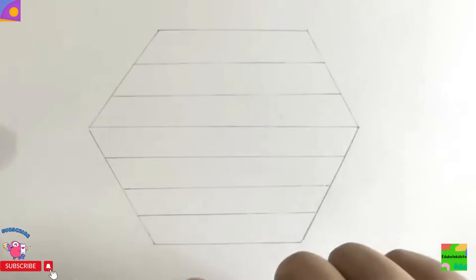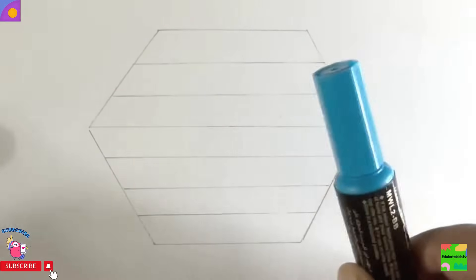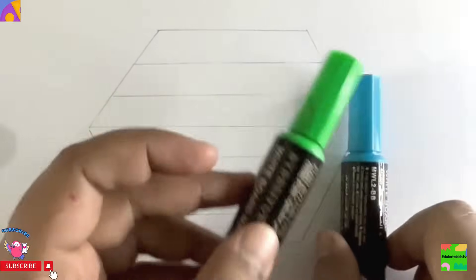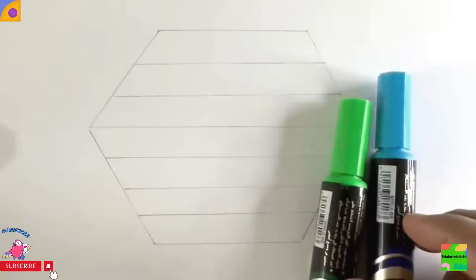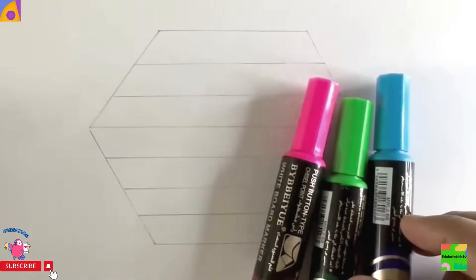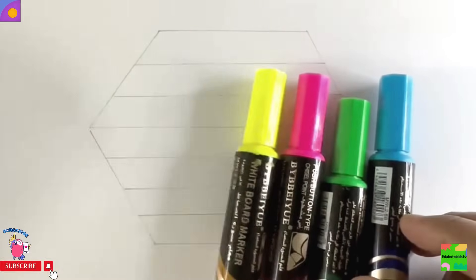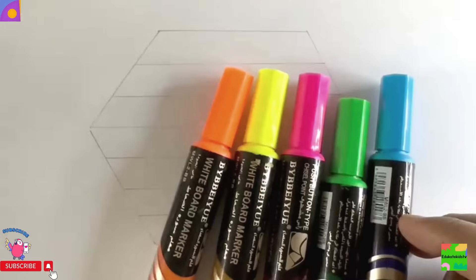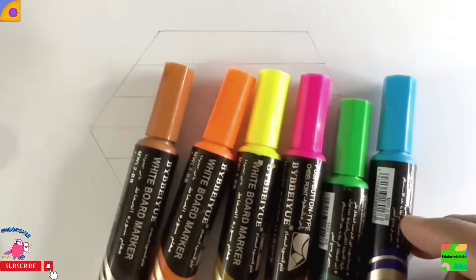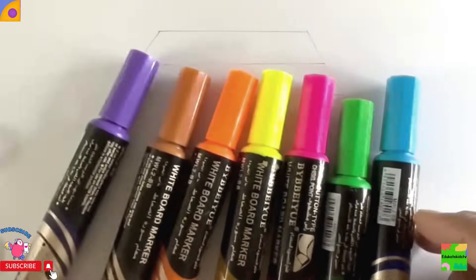Hello kids! How are you all? Good? Okay, let's learn some colors now. Blue color, green color, pink color, yellow color, orange color, brown color, violet color. Hooray!